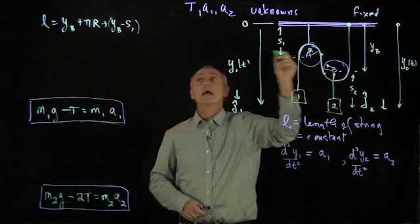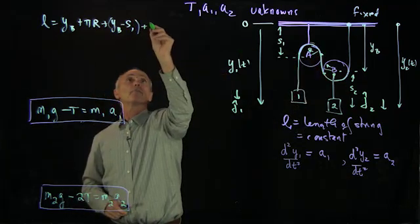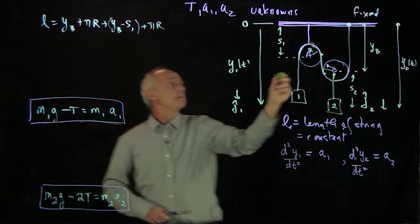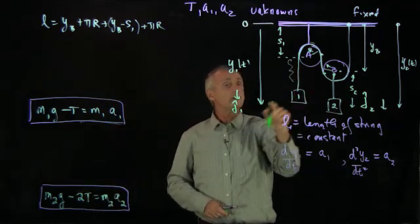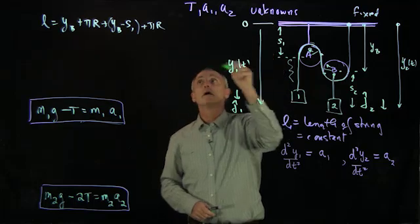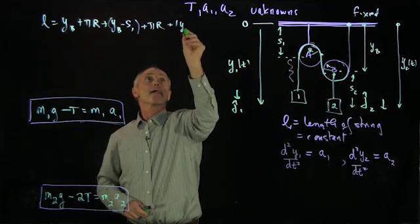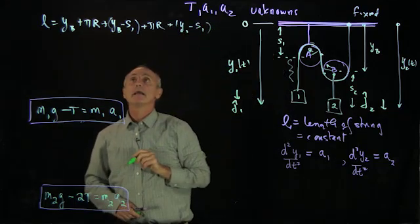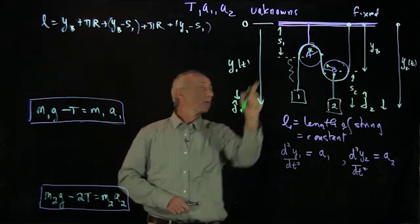We wrap around the pulley again, that's pi r. And now we have this length here, which is y1 minus s1. Let's just make sure we have all of our quantities here.